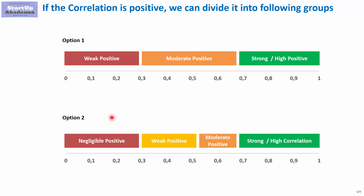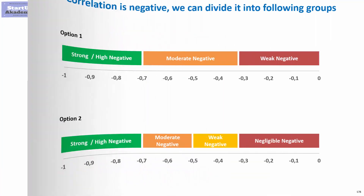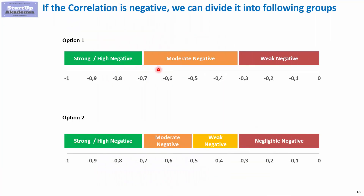A second option defines: negligible from 0 to 0.3, weak from 0.3 to 0.5, moderate from 0.5 to 0.7, and strong from 0.7 to 1. For negative correlation, the strong category goes from minus 1 to minus 0.7, moderate from minus 0.7 to minus 0.3, and weak is the rest — and again you have two options for the exact brackets.